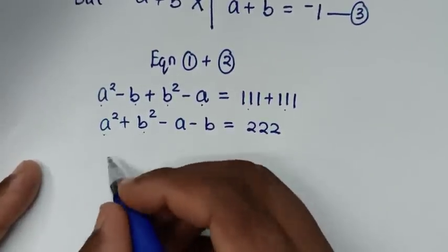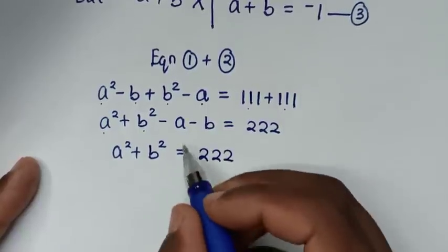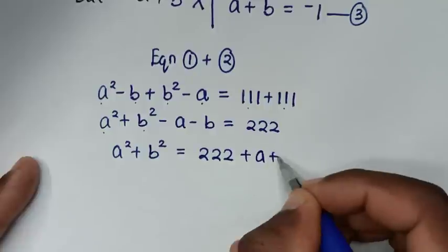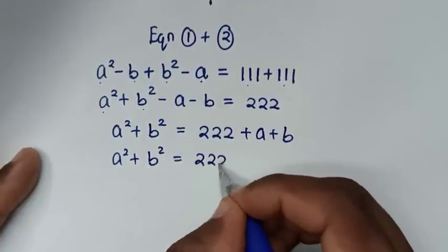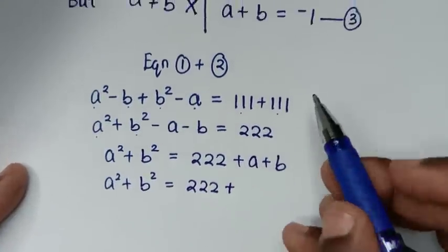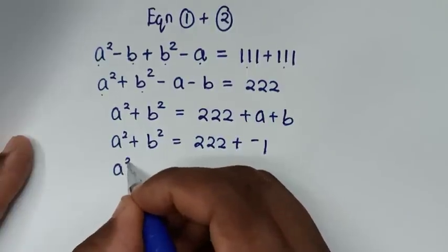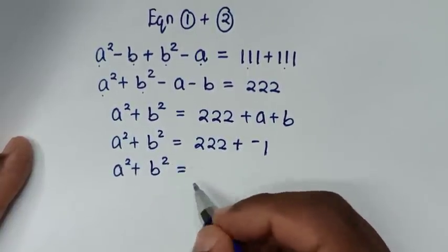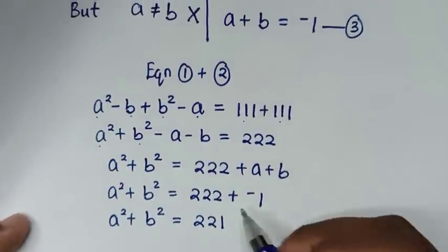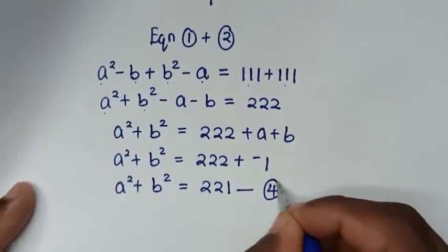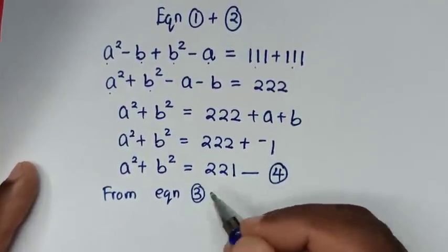So a² plus b² equals 222 plus a plus b. From equation 3, a plus b is negative 1. Substituting gives a² plus b² equals 222 plus (negative 1), which is 221. We call this equation 4.